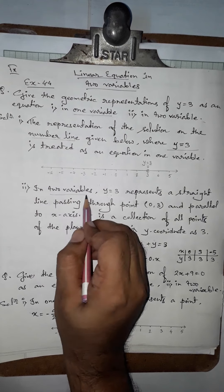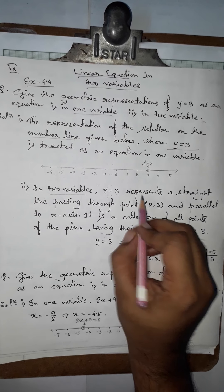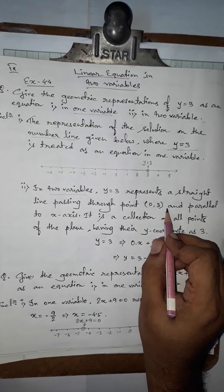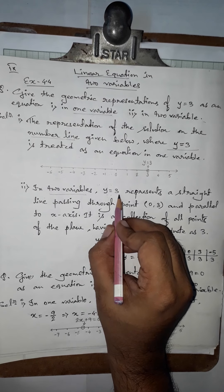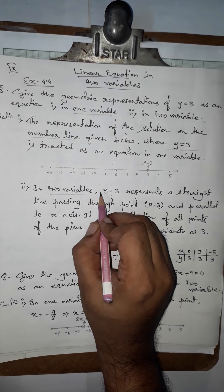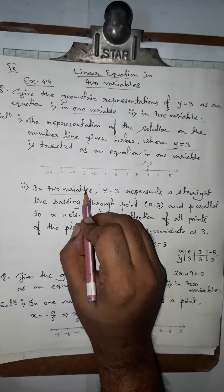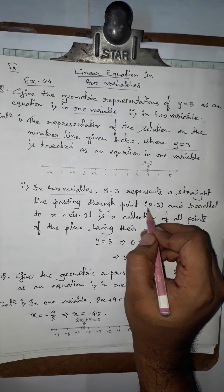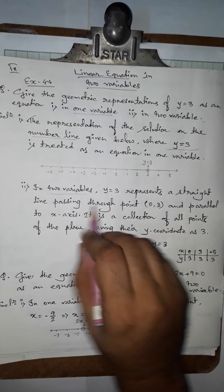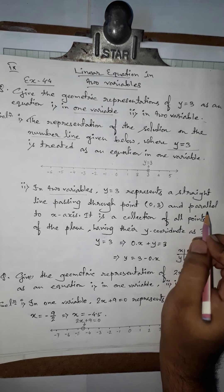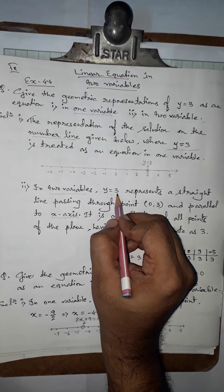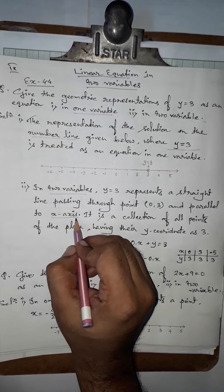Now when we consider two variables, y equals 3 represents a straight line passing through the point (0, 3), because the value of the y-coordinate is given as 3 but the x-coordinate is missing. So the coefficient of x is 0, and 0 times x remains 0. The line passes through (0, 3) and is always parallel to the x-axis, since only the y-coordinate is given.